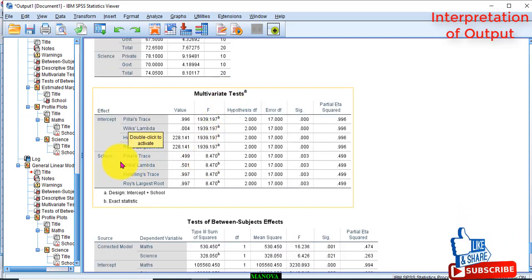Here you need to report only this Wilkes Lambda. You just look at the Wilkes Lambda in the significant column. If the p-value is less than 0.05, then we can say that academic performance is significantly dependent on type of schools attended by the children before.